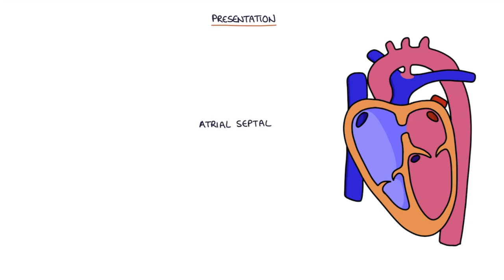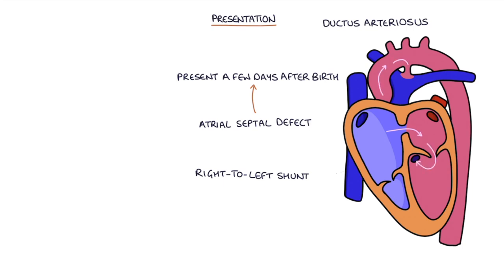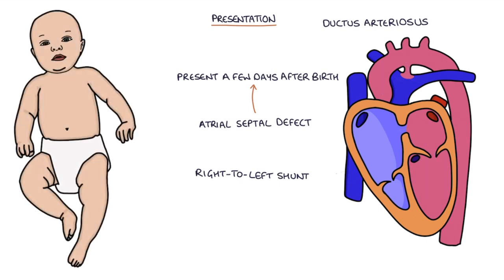Symptoms in patients who have an associated atrial septal defect often present a few days after birth when the ductus arteriosus closes. Where there's a right to left shunt across the atrial septal defect, the ductus arteriosus allows blood to flow from the aorta into the pulmonary vessels to get oxygenated and this minimizes the cyanosis. However, when the duct closes, the patient loses the benefit of having the ductus arteriosus and becomes cyanotic and symptomatic.